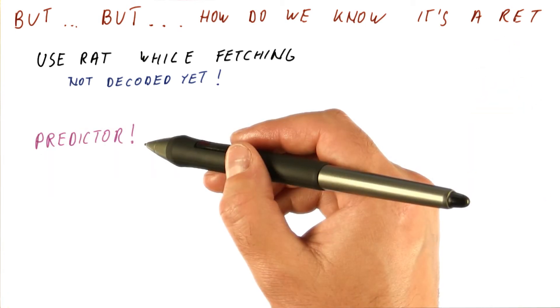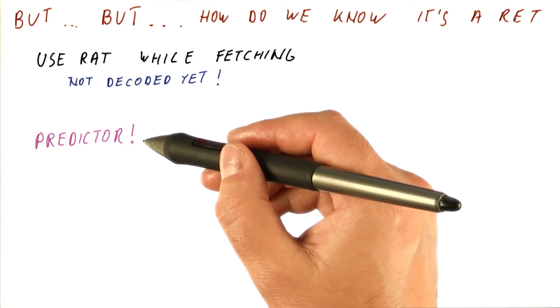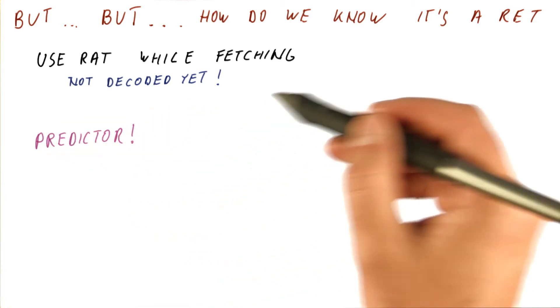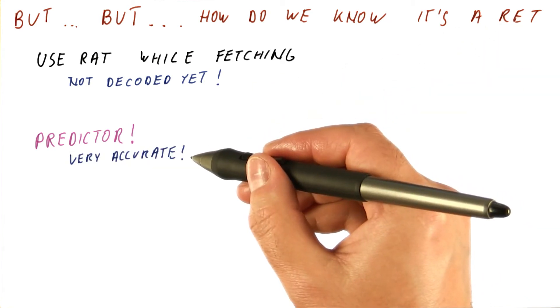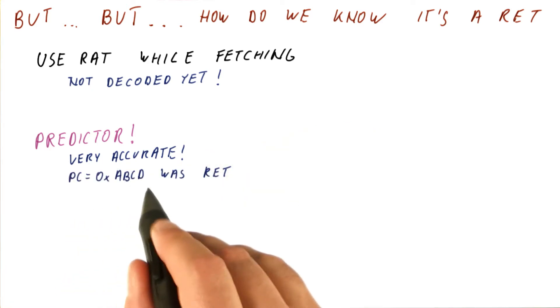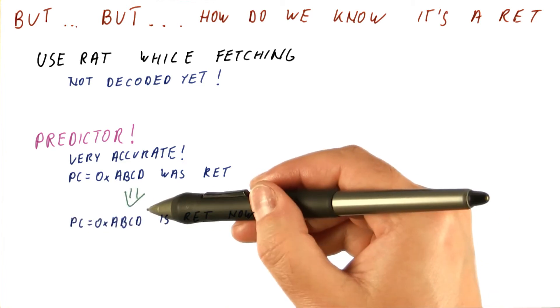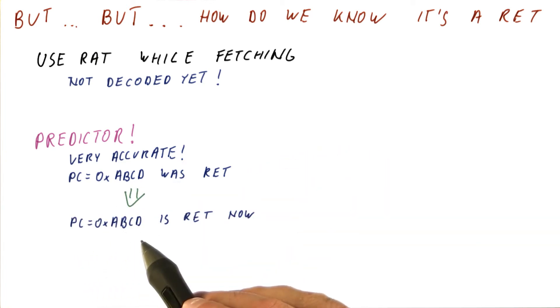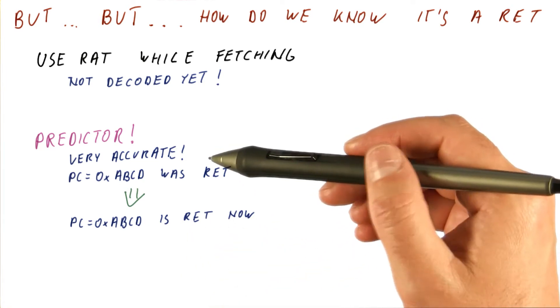One way is to just use a very simple predictor that will be trained on whether the instruction we're fetching is a return or not. Simply train the predictor one way or the other depending on whether it's a return or not, and then make that predictor tell us whether to use the return address stack or not. This would be a very accurate predictor. If at a particular PC we have seen a return instruction previously, then it is very likely that if we see the same PC, we still have a return instruction. So we can use a single bit predictor very easily here.